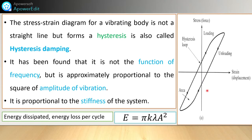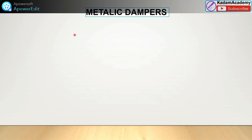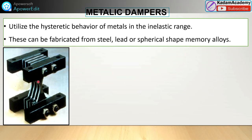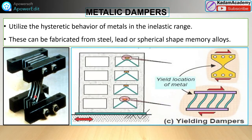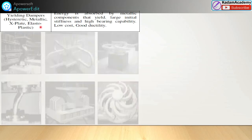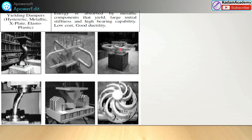Metallic dampers utilize the hysteresis behavior of metals in the inelastic range. They can be fabricated from steel, lead, or shape memory alloys and are used in structures and buildings. Their advantages include large initial stiffness, high bearing capacity, low cost, and good ductility.